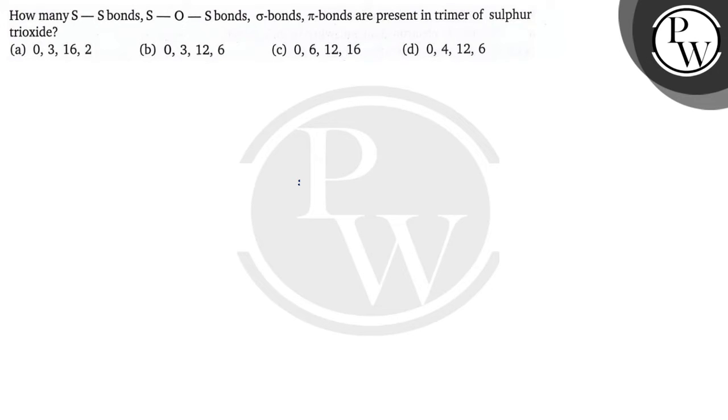Hello, let's read the question. The question says how many S-S bonds, S-O-S bonds, sigma bonds, and pi bonds are present in trimer of sulfur trioxide.